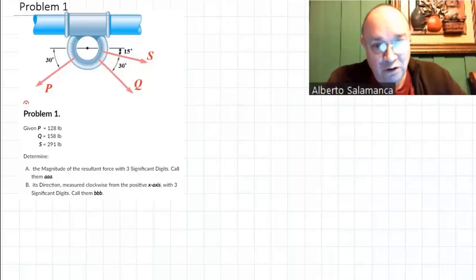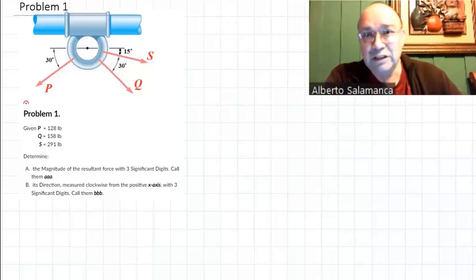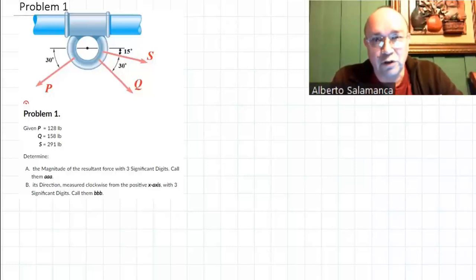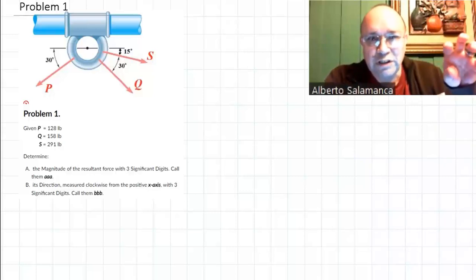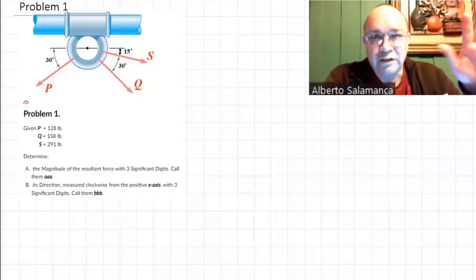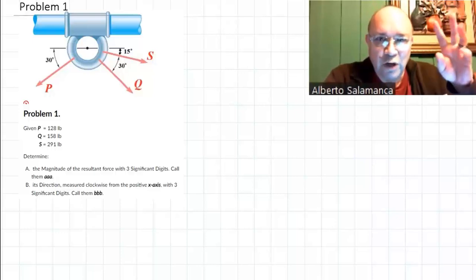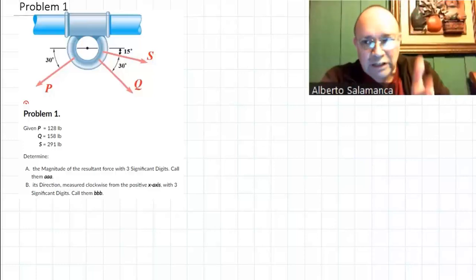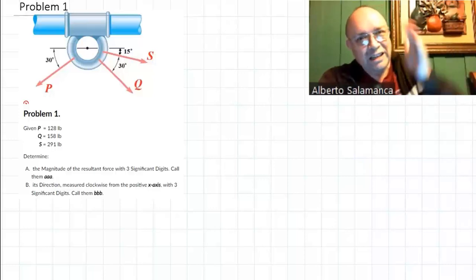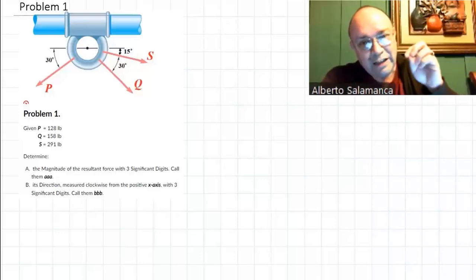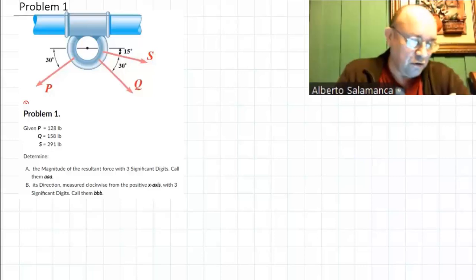In this problem — and I've seen most of the problems in this section — when you are asked for the magnitude or the resultant of a series of forces, what you have to do is decompose the forces into rectangular components. In this problem it's very easy because it's 2D. So you have to get the components in the x and y direction. Once you have those, you add all the x components, then all the y components, and those summations are the components of the resultant.